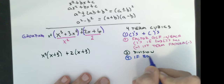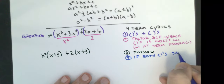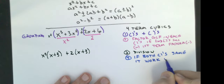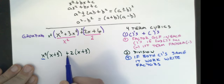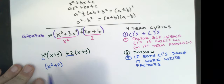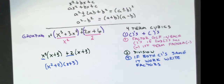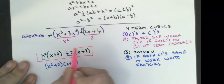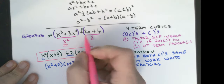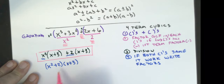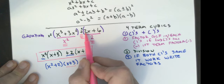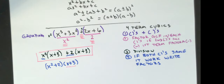Now if both parentheses give the same expression, it works. We write our factors: the first factor is x² + 2 and the second factor is x + 3. As a shortcut, the first factor comes directly from the grouped terms, then you do the division in the first group to get the second factor, and verify by doing the division in the second group to make sure you get the same thing.